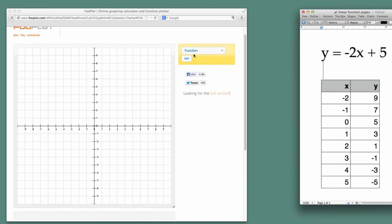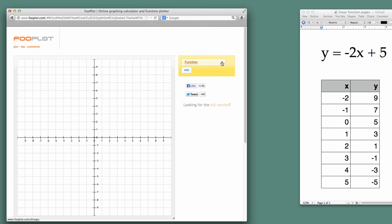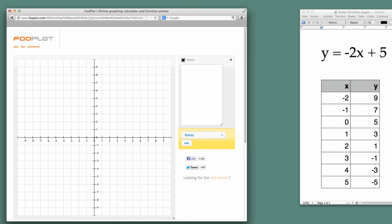So what we're going to do is come over here and I can add a variety of things to this graph using FooPlot. I'm going to change it from a function using the drop-down to Points, and I'm going to click Add. Notice they give us some sample points here: 0, 0, 1, 1, 2, 2, 3, 1, etc. Those aren't the points we're interested in. So I'm going to select them all, hit Delete. And then I'm going to enter in the points as we have them.